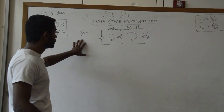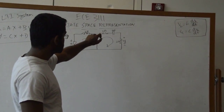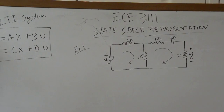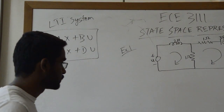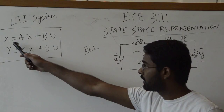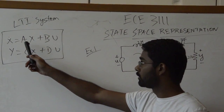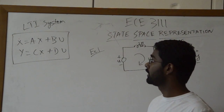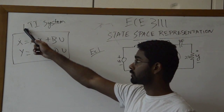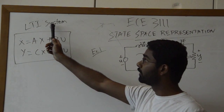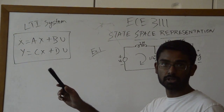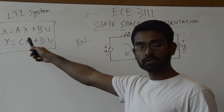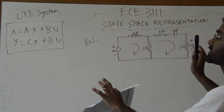Let's take this first example. A quick reminder: this is the generic state space representation. We have x-dot equal to Ax plus Bu as the state equation, and y equal to Cx plus Du as the output equation. This represents a linear time-invariant system, and given a system, we want to come up with a representation that looks like this so we can represent the system mathematically.